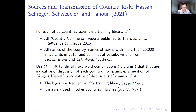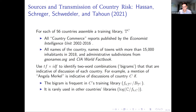Another paper — currently unfinished, with Jesse as co-author — takes essentially the same TF-IDF method and applies it to measuring sources and transmission of country risk. The goal is to use firm-level documents to measure how much risk each individual firm associates with each other country in the data.